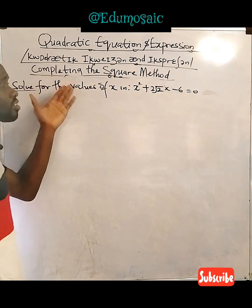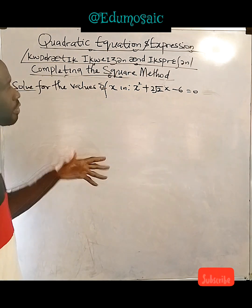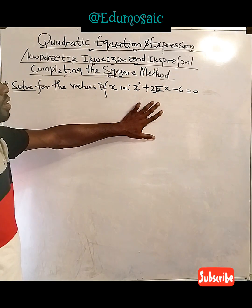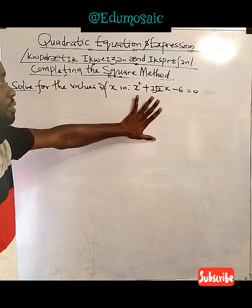Now, don't forget, we are using completing the square method. So how do we solve this quadratic equation, this Olympiad math?